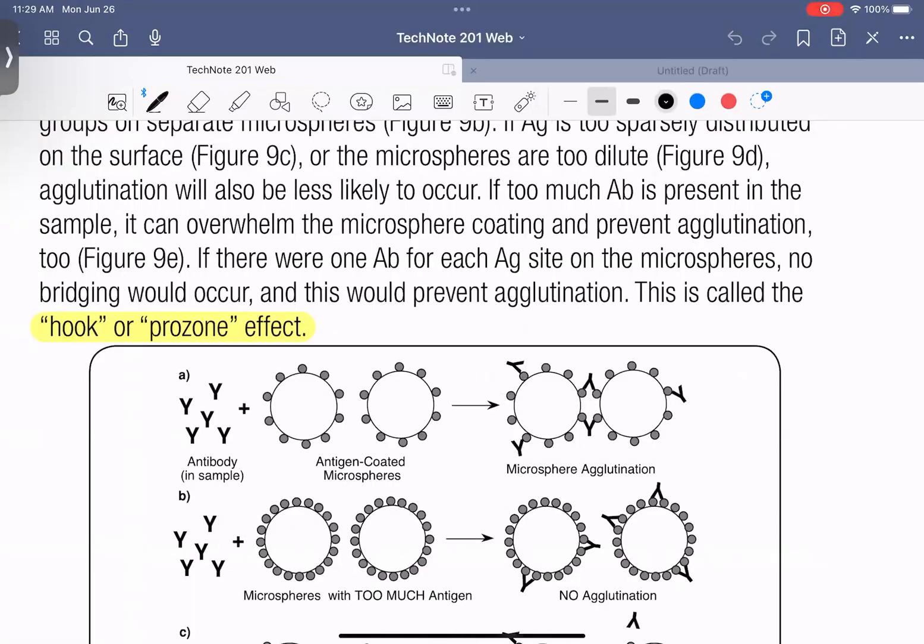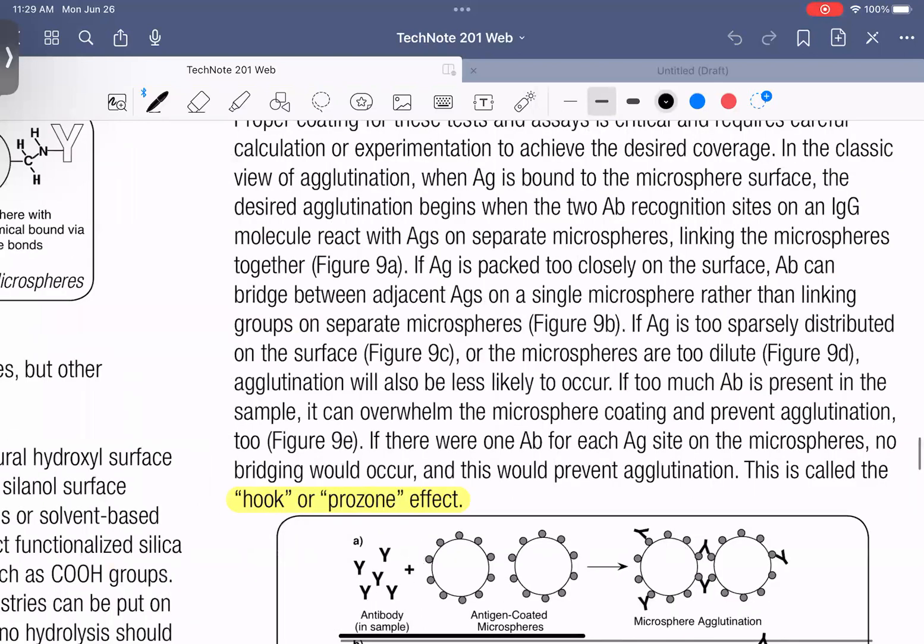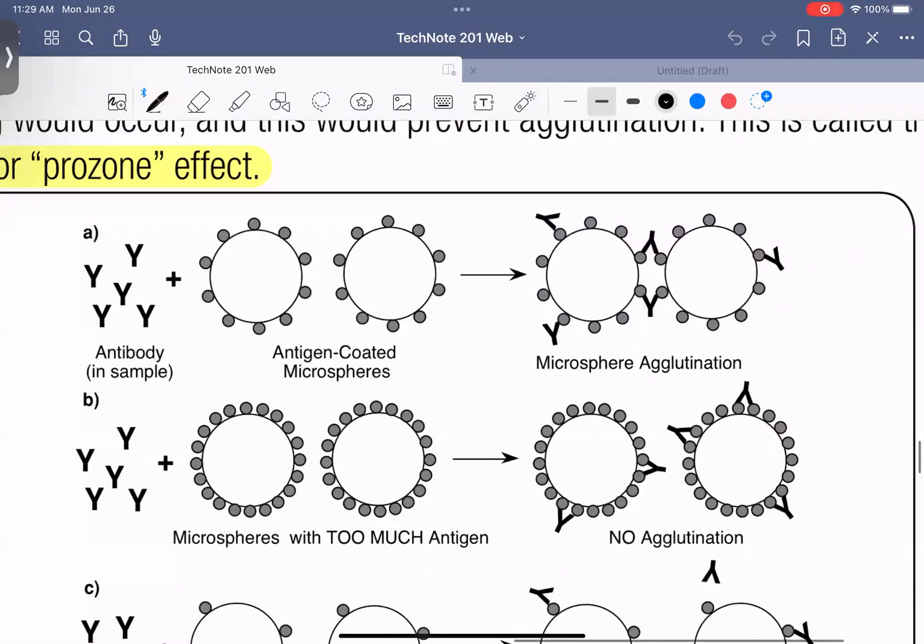Okay. So I really like this explanation for it. They do a really good job. So here's the figure. Now condition A, this is what you're looking for. So here, instead of doing antibodies bound to the microspheres, they're doing the opposite. It's fine. It's the same thing. They've got antigen-coated microspheres and antibody in sample. Now this is what you're looking for. The antibodies are bridging between two microspheres to produce a signal. That's what you're working to get.